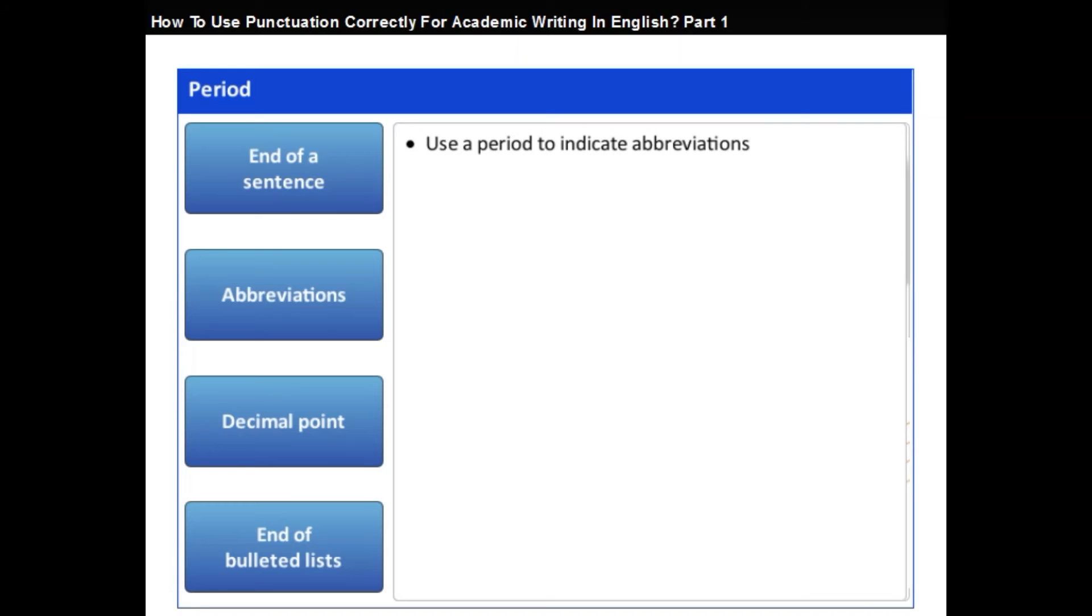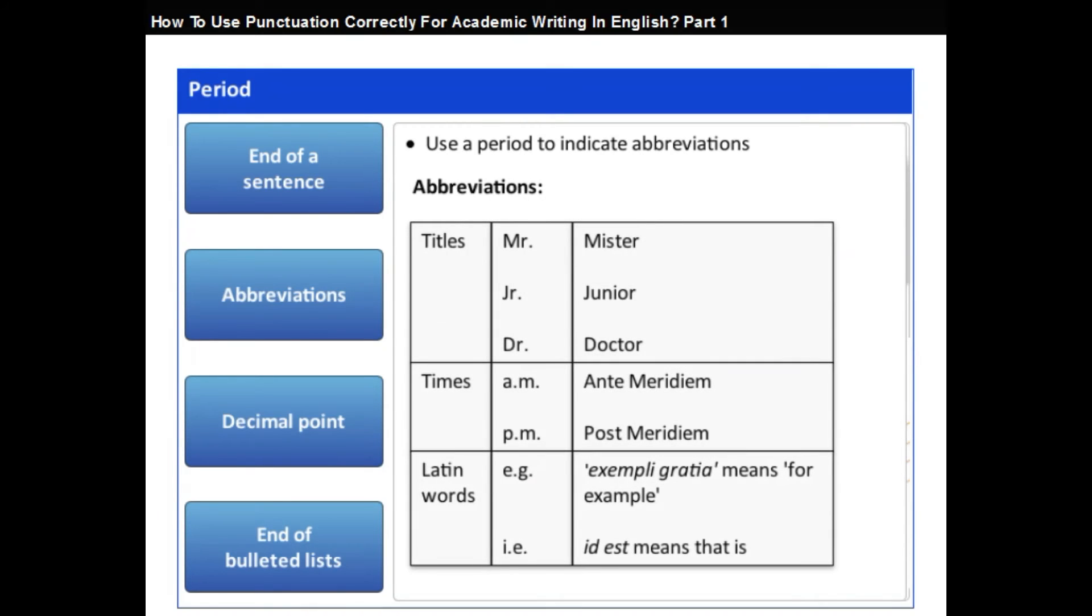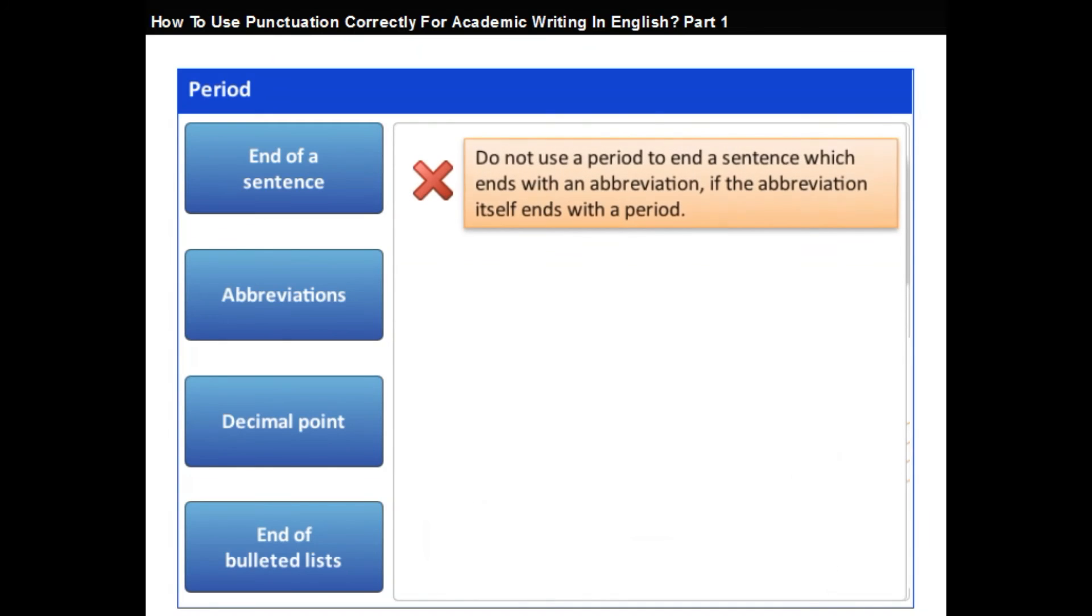A period is used for indicating abbreviations of titles, time, and contractions of Latin words. Do not use a period to end a sentence which ends with an abbreviation if the abbreviation itself ends with a period.